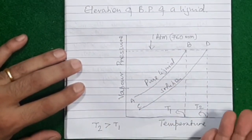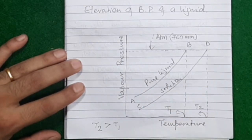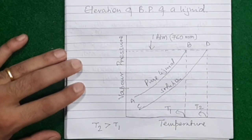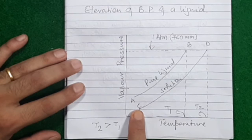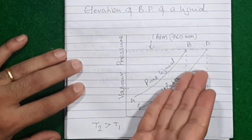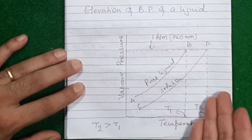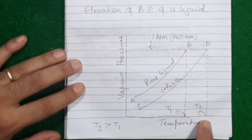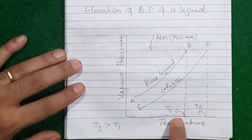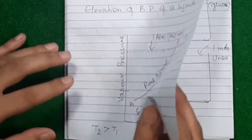This phenomenon of elevation of boiling point can be explained using the vapor pressure-temperature diagram of a pure liquid and its solution. It clearly shows that the boiling point always increases when you prepare a solution. The reason is the lowering of vapor pressure — since the solution's vapor pressure is lower, it takes more heating to equalize vapor pressure with atmospheric pressure, so it boils at a higher temperature.